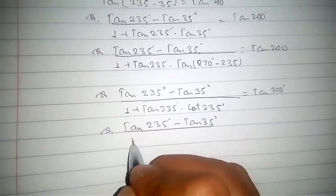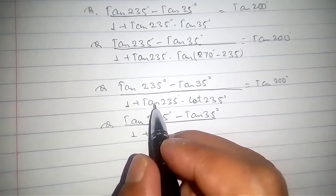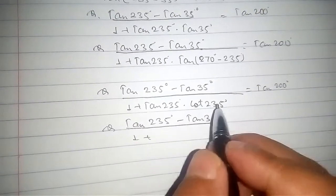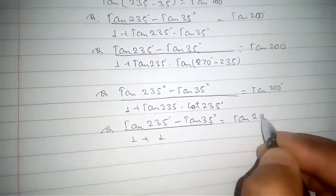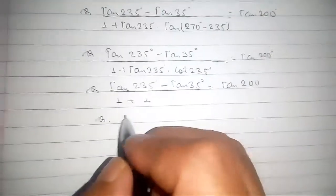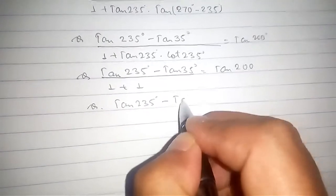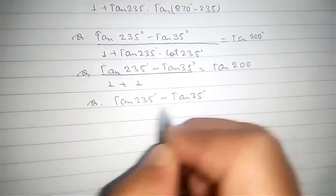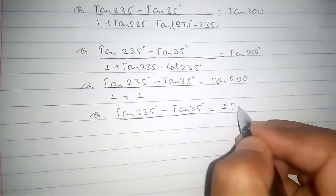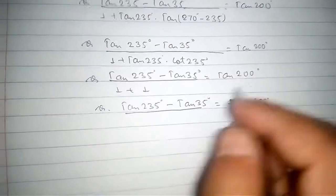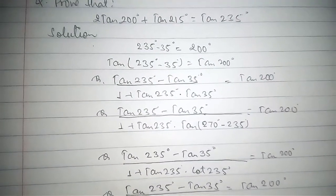This expression is falling into the form of tan(A) minus tan(B), divided by 1 plus tan(A)·tan(B). See this simplifies and equals tan(200°). Now, in the question we need to bring tan(200°) plus tan(215°) equals tan(235°).